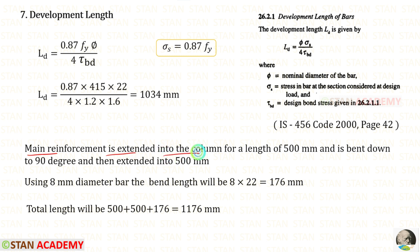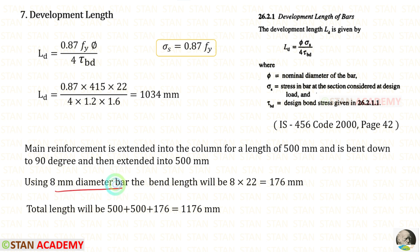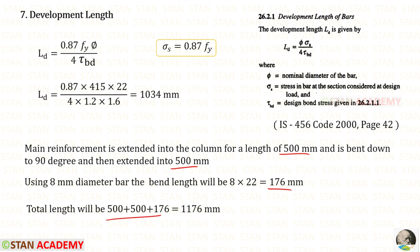The main reinforcement is extended into the column for 500 mm and bent down 90 degrees, then extended a further 500 mm for the bent portion. Using an 8 mm diameter bar, the bent length formula is 8φ, where φ = 22 mm for the tension rebar, giving 8 × 22 = 176 mm. The total development length provided is 500 + 500 + 176 = 1176 mm, which exceeds the required 1034 mm.